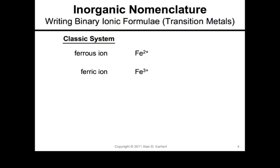It's not like sodium — when sodium forms an ion, it forms one plus. So the classic system helps dispel that doubt. The problem is, how do you know what the charge is? Maybe the '-ous' in ferrous means 2+. Let's look at the stannis and the stannic ion. Stannis (tin) is 2+, but stannic is 4+, not 3+. The '-ous' means a smaller charge than the '-ic'. We'd like to use something better so you actually know the charge instead of memorizing a bunch of them.